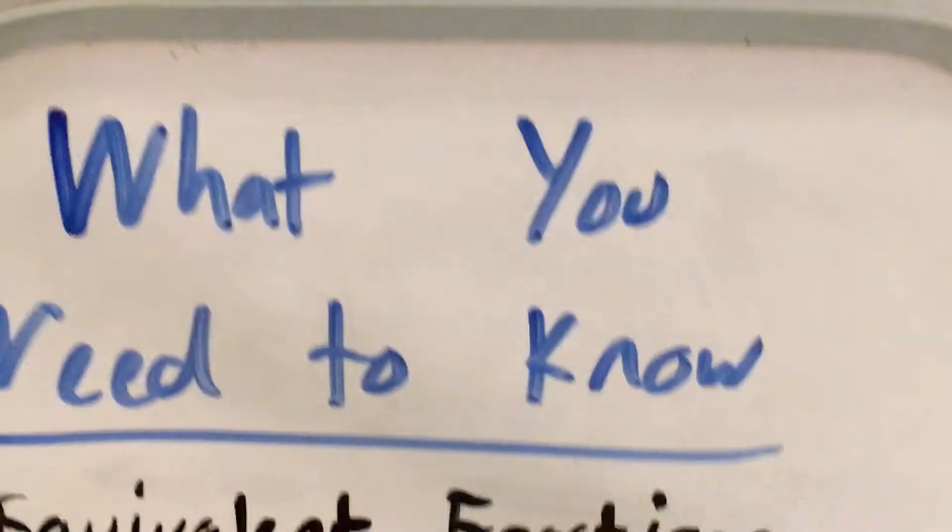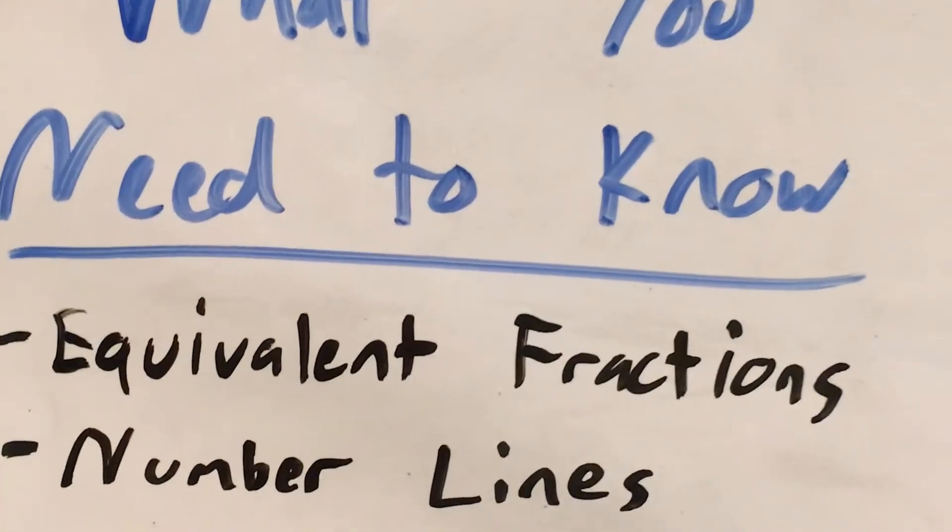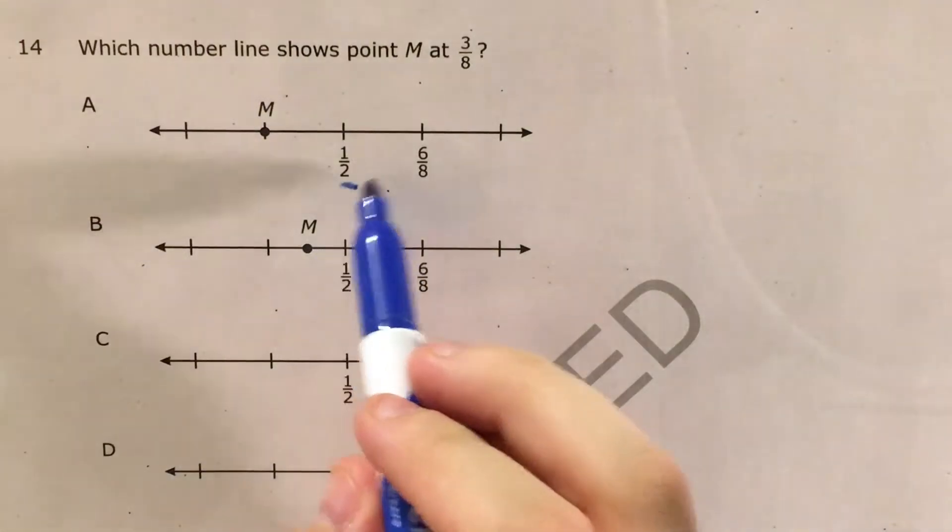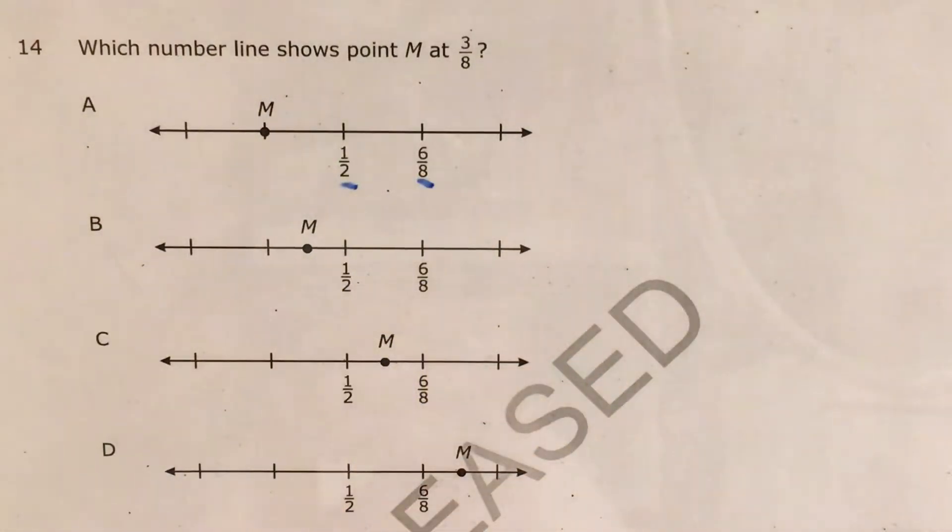In order to do this question, you need to know about equivalent fractions, and you also need to know how to work with number lines. So let's start with equivalent fractions, because I can see that one-half and six-eighths have different denominators. So I want to go ahead and try to see if I can get these to have the same denominator.